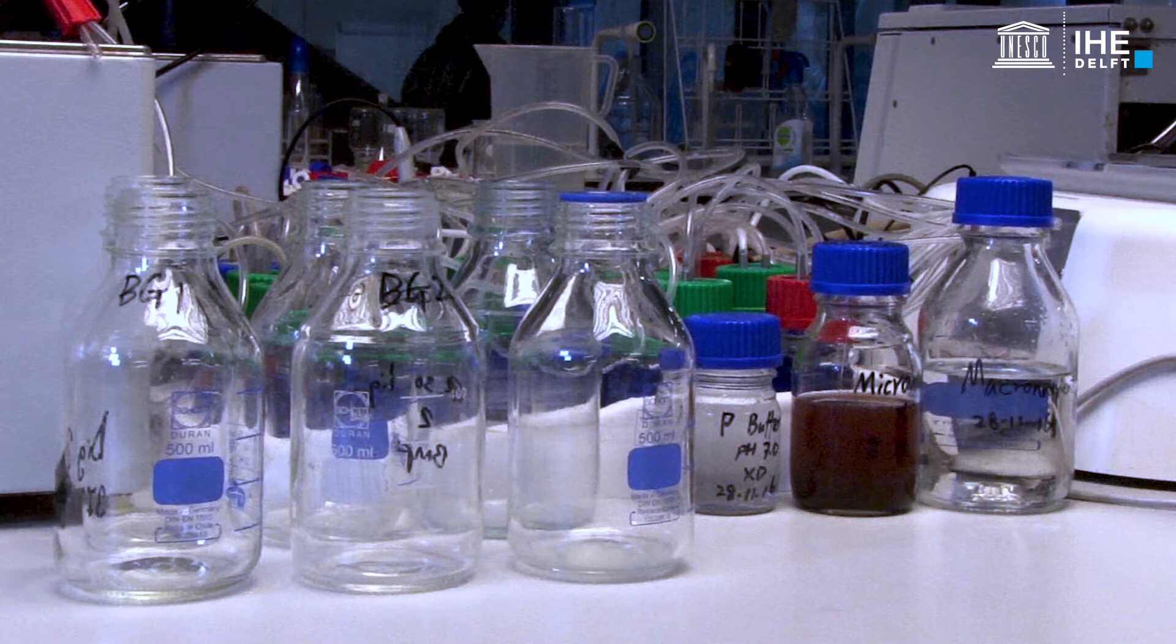The BMP test is carried out in triplicate. First, mark all the bottles clearly - three blanks and three samples. The blank bottles are filled with inoculum and demi-water, and the sample bottles with sludge waste as substrate and inoculum.